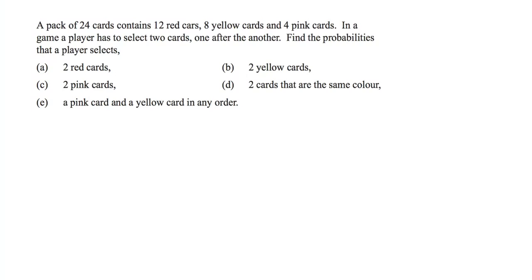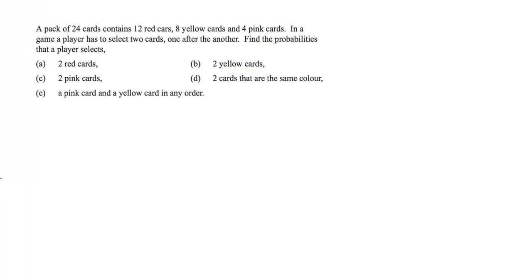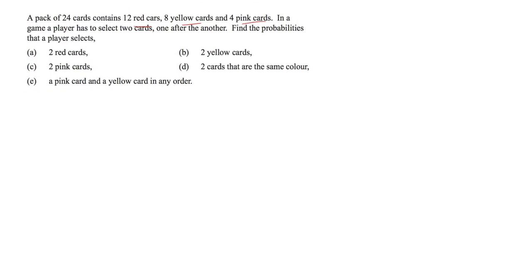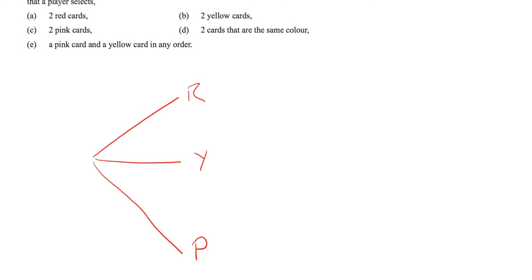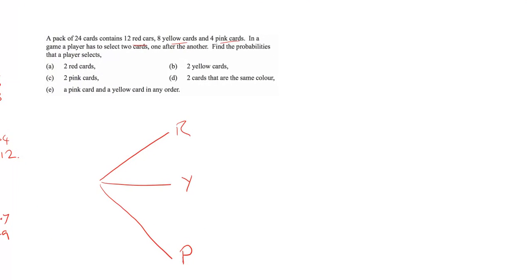For the final question, we have a pack of 24 cards containing 12 red, 8 yellow, and 4 pink. A player selects two cards one after another. This is slightly different because we have three different outcomes, so we need three branches: red, yellow, and pink. On the first draw: 12 over 24 for red, 8 over 24 for yellow, and 4 over 24 for pink.